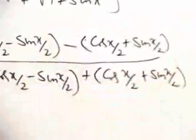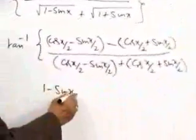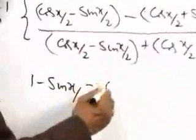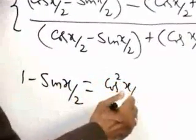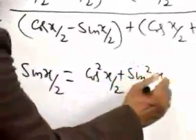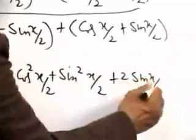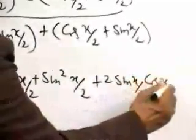Here you remember that 1 minus sin x is the same as cos x by 2 plus sin x by 2 the whole square, plus 2 sin x by 2 into cos x by 2.